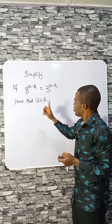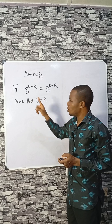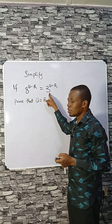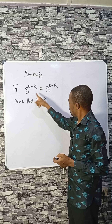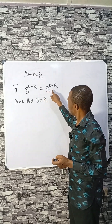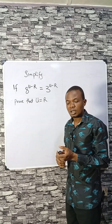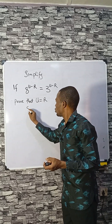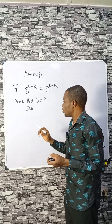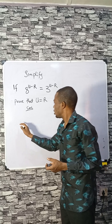Check closely — is it possible to compare the powers here? Because here the base is 8 and here is 3. If here was 2 it would have been easier to raise to power 2, but how can we do this? Let's see another way. We have to prove that u equals r. If you know of any other method of solving this, please let me know in the comment section.